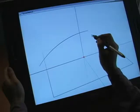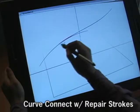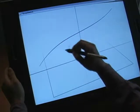Alternately, the user can apply the period gesture for immediate curve settlement. Repair strokes over two tangent curves connect them smoothly.